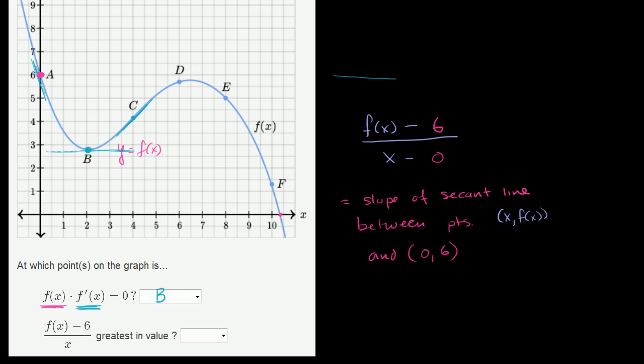This is essentially the slope of the secant line between some point x, f(x) and essentially point A. So let's draw this out. Between A and B, you have a fairly negative slope. Remember, we want to find the largest slope. So here it's fairly negative. Between A and C, it's less negative. Between A and D, it's even less negative. It's still negative, but it's less negative. And then between A and E, it becomes more negative now. And then between A and F, it becomes even more negative.